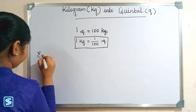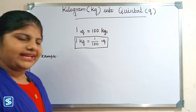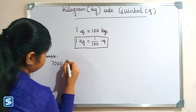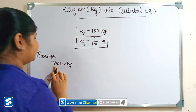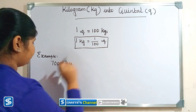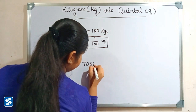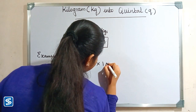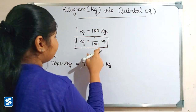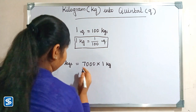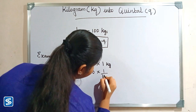Now we will take some examples. For example, we can take 7000 kilograms — we have to convert 7000 kilograms into quintals. 7000 kilograms can be written as 7000 multiplied by one kilogram. Now we have to substitute 1/100 quintal in the place of one kilogram, so it becomes 7000 multiplied by 1/100 quintal.